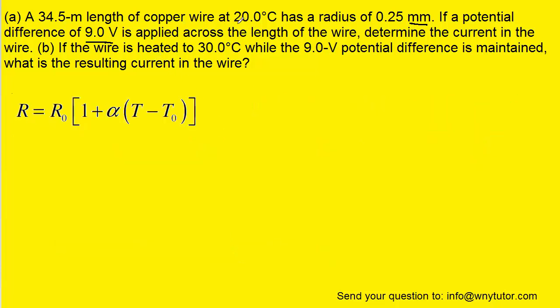Now in part B, the wire is being heated from 20 degrees Celsius up to 30 degrees Celsius, and we know that when a wire is heated, its resistance is going to increase according to this equation right here.